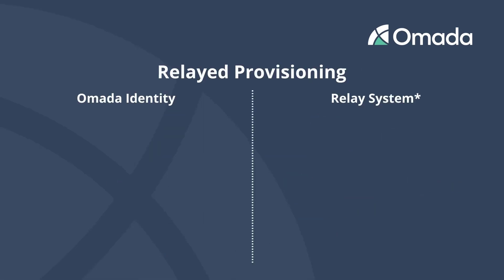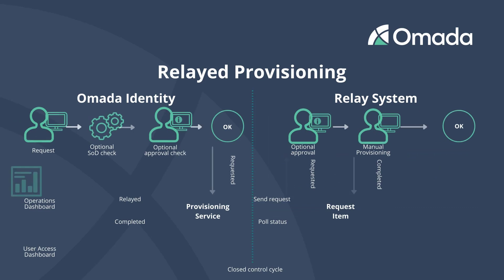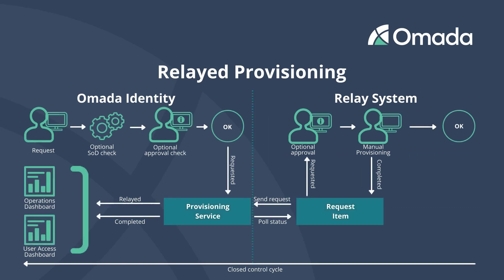The solution is simple. We use a relay system to perform the tasks. This may be an IT service management solution like ServiceNow or a dedicated governance, risk and compliance tool like SAP GRC. After requesting access in OMADA Identity, a provisioning task is sent to the relay system. The task owner performs all activities to complete the task and confirms his action. OMADA Identity polls the task status and controls the actual fulfillment due to the collector configuration with its closed control cycle.